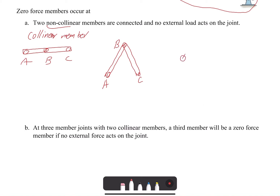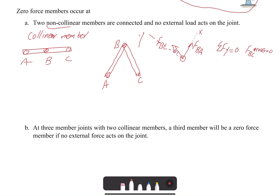To prove this, I draw a free body diagram for joint B with two forces FBA and FBC acting at the joint. Setting up a coordinate system with x and y axes, if I write summation of forces in y equals zero, I only have FBC times some angle equals zero, which gives FBC equals zero. Then writing summation of forces in x equals zero, since FBC is already zero, FBA would be zero as well. So by equilibrium, the two non-collinear members are zero force members.